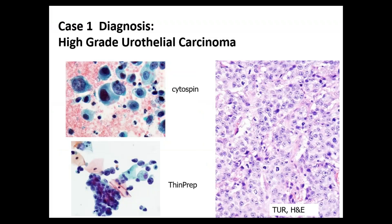This particular case was a high-grade urothelial carcinoma, because of the high nuclear cytoplasmic ratio, hyperchromasia, and irregular nuclear contours. On cytospin preparation and thin prep, you see very high NC ratios with coarse and clumped chromatin pattern. Next to it is a transurethral resection showing the tumor with a very high mitotic rate and large sheets and nests of tumor cells — high-grade urothelial carcinoma confirmed.